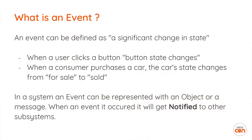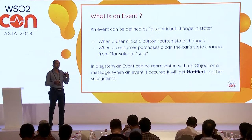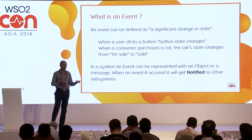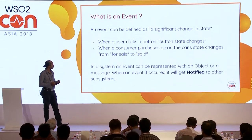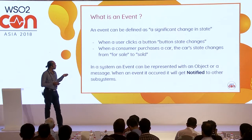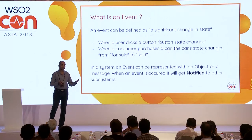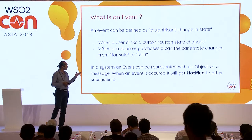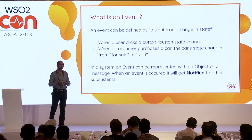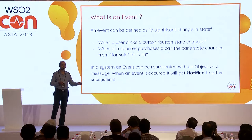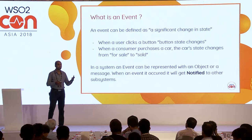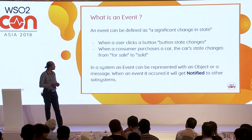Let's take a look at what is an event. In day-to-day life, we come across a lot of events which happen asynchronously. But we need to understand what an event is for a system. One definition that stands out is: an event is a significant change of state in a system. If you're familiar with UI development, one common event is a button click. When a user clicks a button, the state of the button changes, and because of that you get notified with an event.